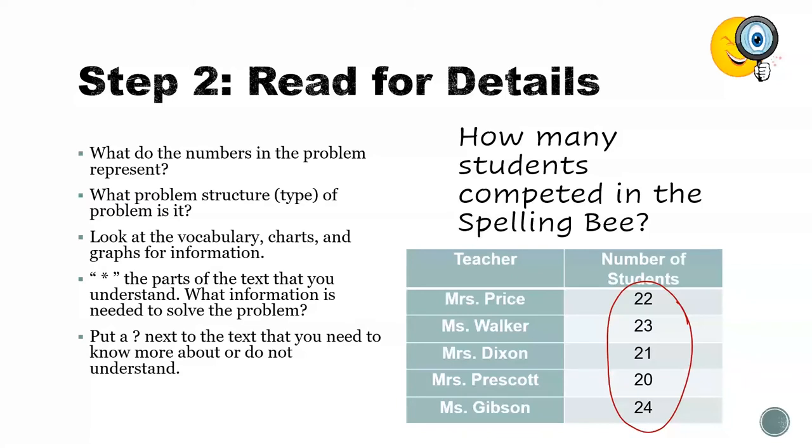Each class has a different number of students. Those numbers are really important to the problem. And it makes sense to me that they are all around 20, 21, up until 24, because I know from going to school that most first grade classes have between 20 and 25 kids. So these numbers make sense to me.